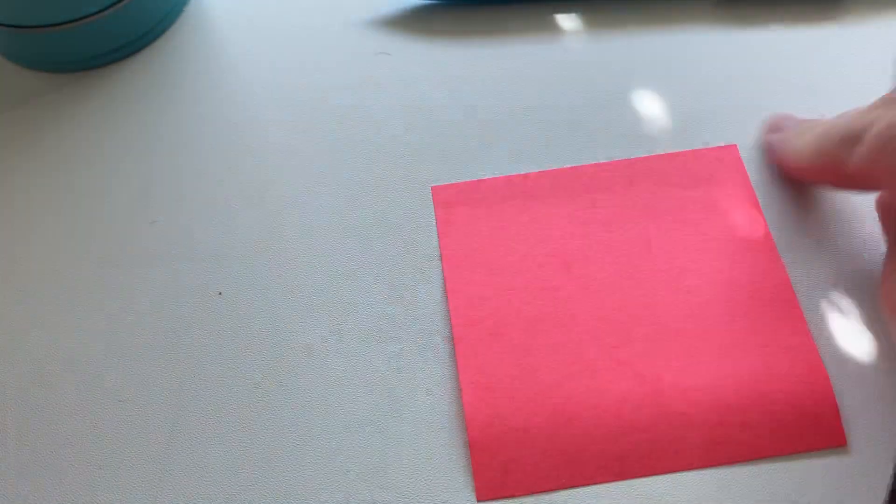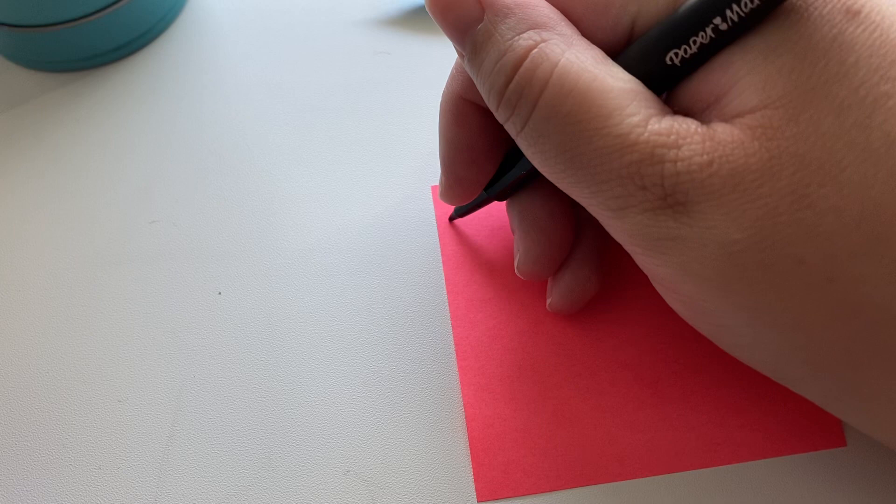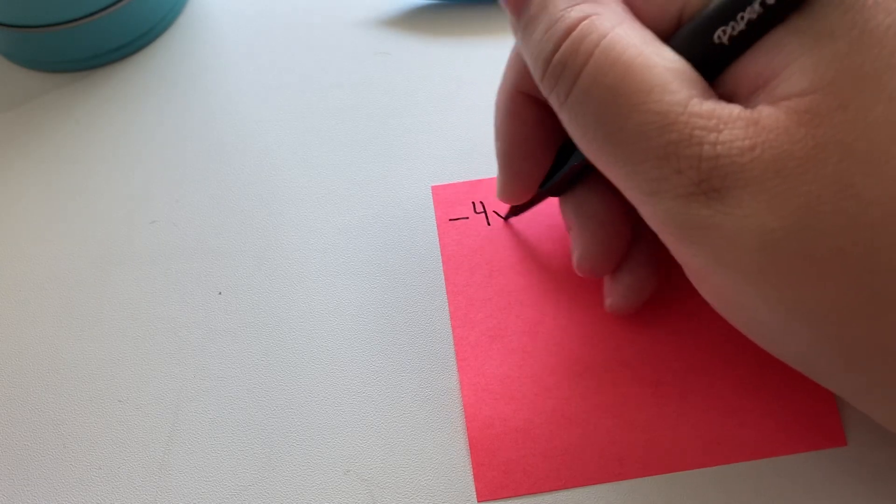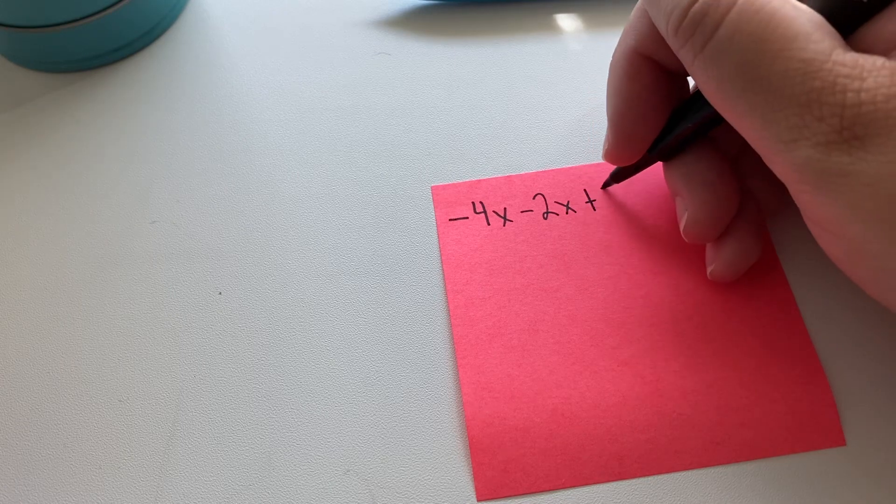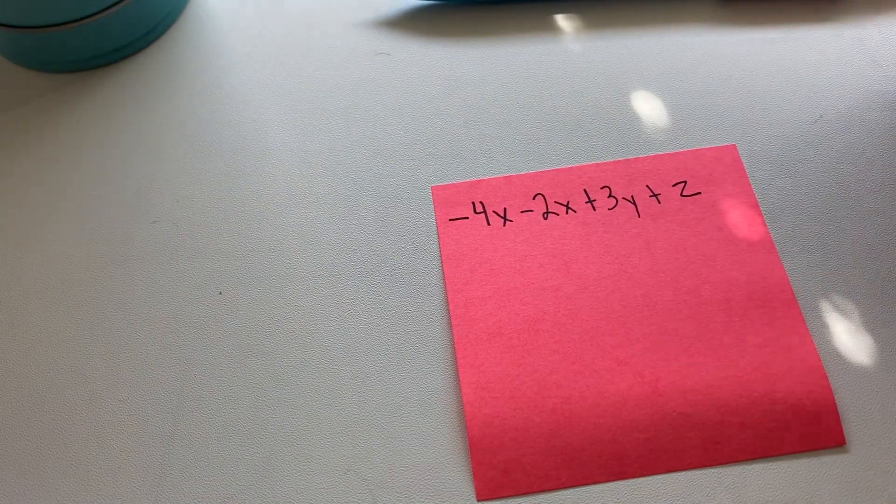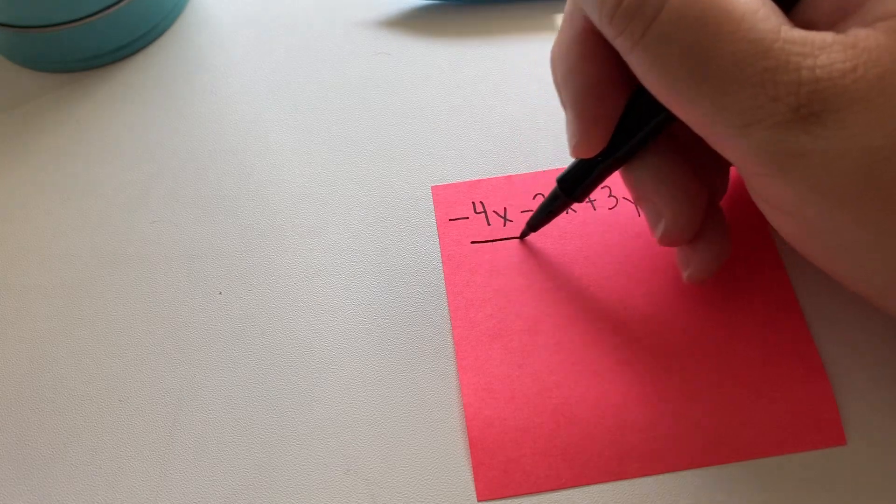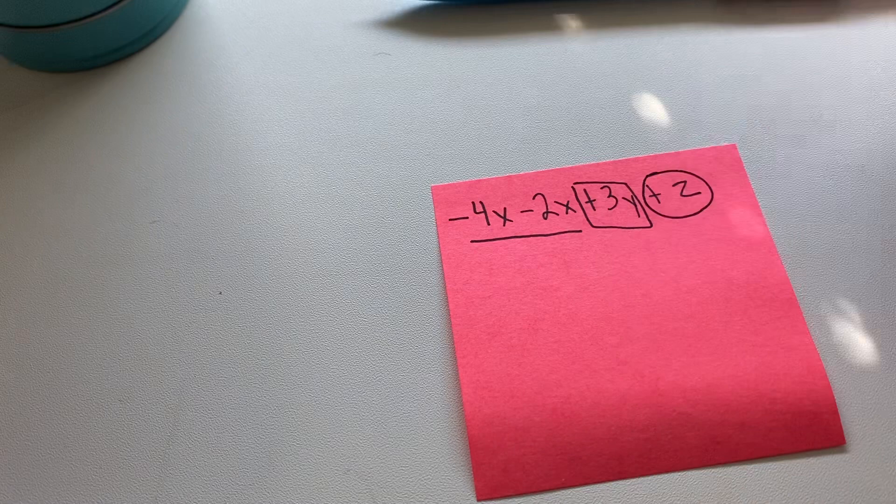And there's one more example that I would like to show here. So let's say we have negative 4x minus 2x plus 3y plus z. These are our x's, our y's, and our z's.